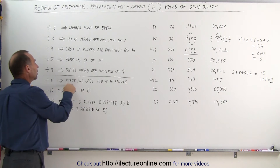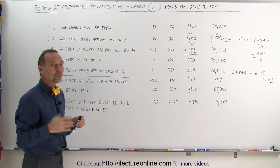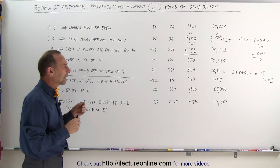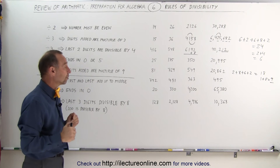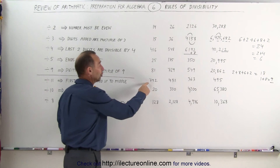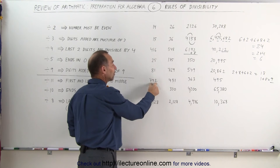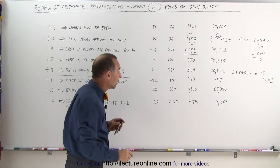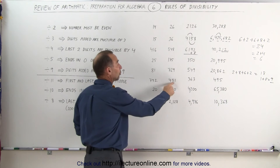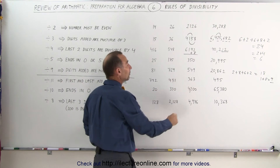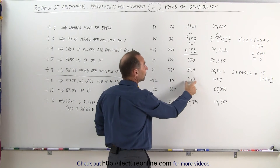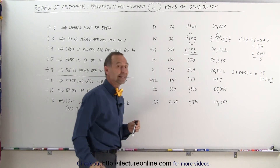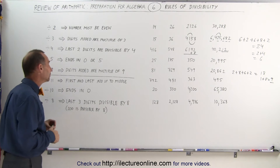On the rule for divisibility by 11, we need to have a three-digit number — it only really works for a three-digit number, and for certain three-digit numbers. But if the first and the last digit add up to the middle digit, the whole number is divisible by 11. 4 plus 1 is 5, so we can divide that by 11. 3 plus 3 is 6, so we can divide that by 11. And 4 plus 5 is 9, so we can divide that by 11. Again, really handy to know.